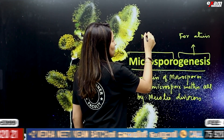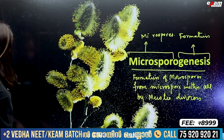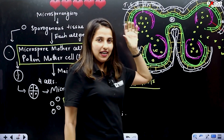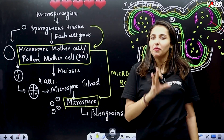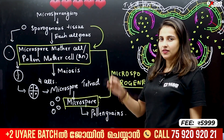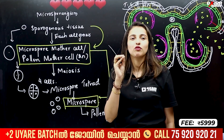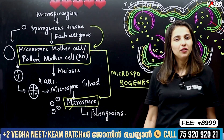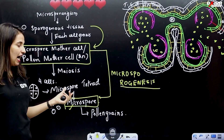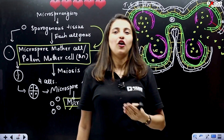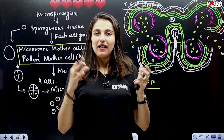Microspores are formed from the microspore mother cell. Step 1: look at microsporangia. We have the formation of sporogenous tissue, then the formation of microspore mother cell, also called pollen mother cell. That is Microsporogenesis. Clear? Okay — after all, a simple and clear process. Let's talk about the names.